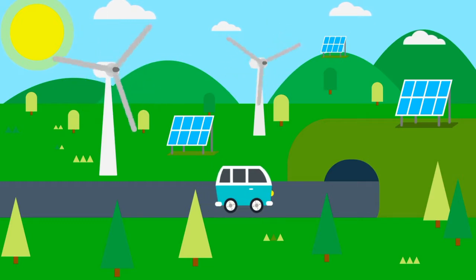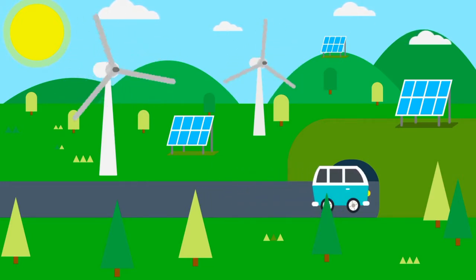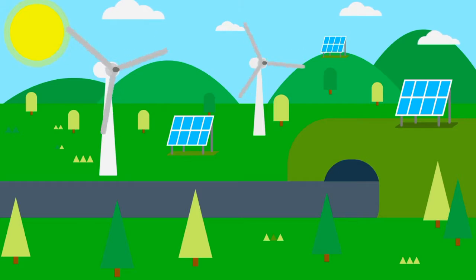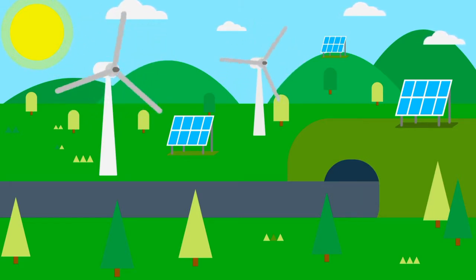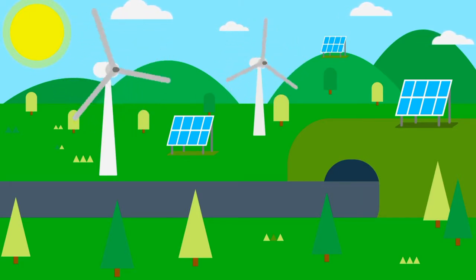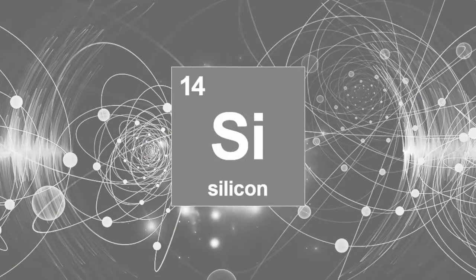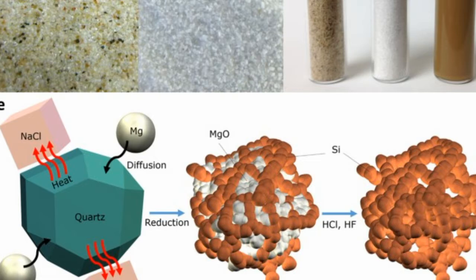Energy from the sun is the most abundant and absolutely freely available energy on planet Earth. In order to utilize this energy, we need the help of the second most abundant element on Earth, which is sand. The sand has to be converted to 99.99% pure silicon crystal for use in solar cells. To achieve this, sand has to go through a complex purification process as shown.